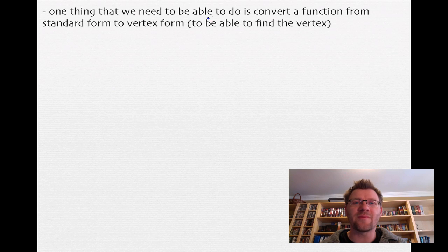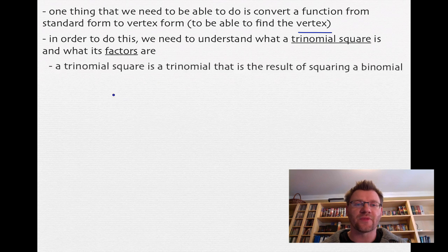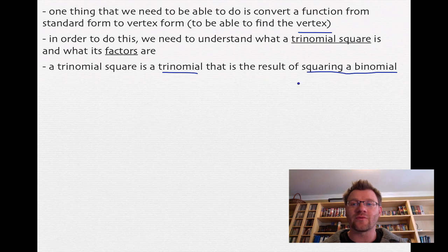One of the things we need to do in this course is convert a function from standard form to vertex form, so we can find the vertex of a quadratic function. To do this, we need to understand what a trinomial square is and what its factors are. A trinomial square is a trinomial that is the result of squaring a binomial, and its factors are that binomial that was squared.